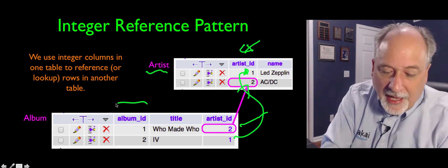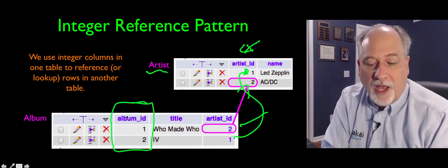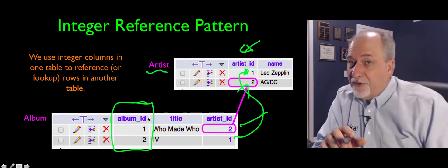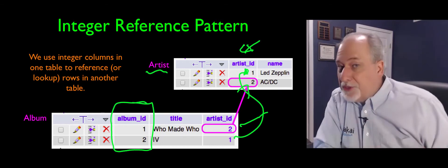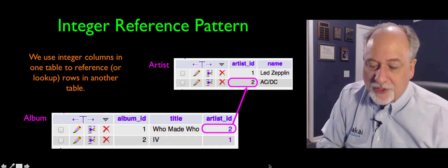Now, this album also itself has rows, and we put a key here as well. And so each album has a number, and so anywhere we want to reference who made who, we don't put the string who made who, we put the number one. Same for Led Zeppelin four, we put the number two.